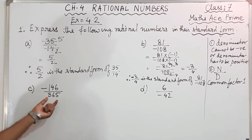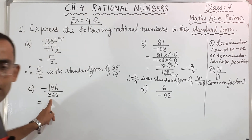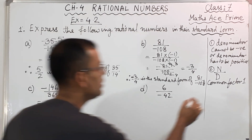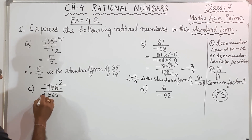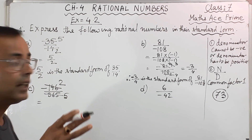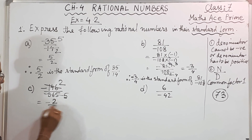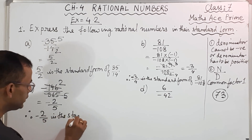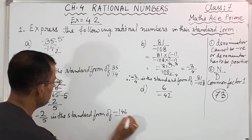Now this one: minus 146 by 365. The denominator is positive, no problem. Now I have to only reduce it. Whenever you will get 365, remember, it will cut with 73. So 73 twos are 146 and 73 fives are 365. So what you get? Minus 2 by 5. Therefore, minus 2 by 5 is the standard form of minus 146 by 365.